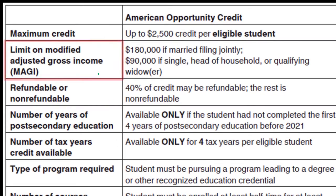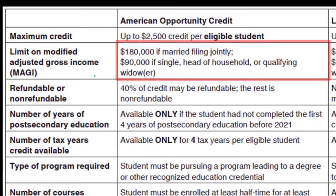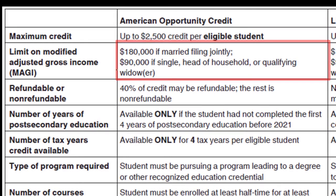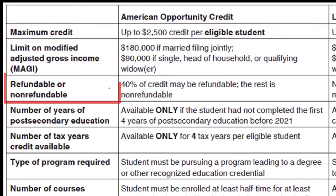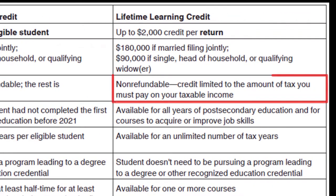The limit on modified adjusted gross income: the American Opportunity Credit phases out at $180,000 if married filing jointly, or $90,000 if single, head of household, or qualifying widow/widower. The Lifetime Learning Credit has the same limits — $180,000 married filing jointly, $90,000 if single. Refundable vs. non-refundable: the American Opportunity Credit has 40% of the credit that may be refundable, and the rest is non-refundable. The Lifetime Learning Credit is entirely non-refundable, limited to the amount of tax you owe.